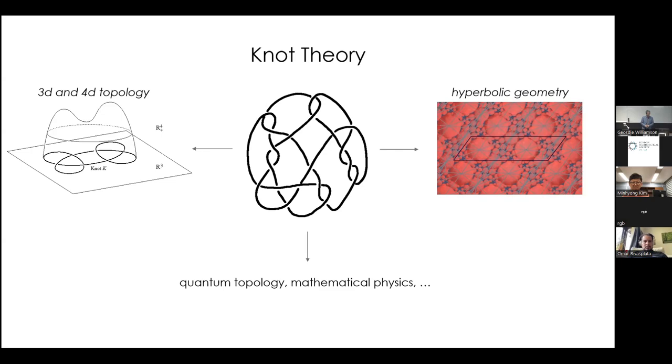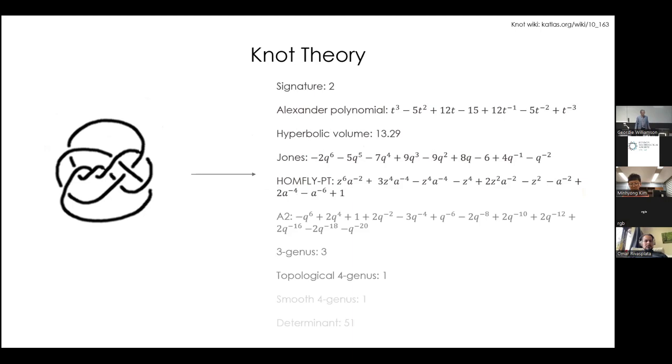Now in knot theory, an enormously important role is played by invariants. So these are some kind of measurement of the complexity of the knot, some kind of measurement of a topological property, or something that is rather mysterious still. So here's a whole list of invariants that we can associate to a knot that are very useful, for example, for telling two knots apart. So these invariants are often kind of tied to a field in which they're born. So signature, for example, is born in the topological study of knots. Alexander polynomial is also from topology. Hyperbolic volume is from hyperbolic geometry. The Jones, Homfly, and A2 polynomials are from quantum topology. And there's many, many others.